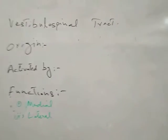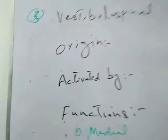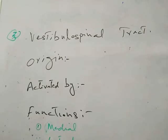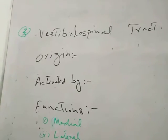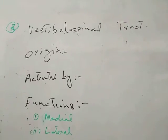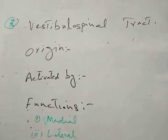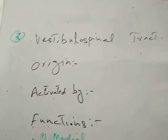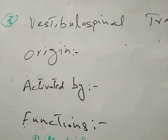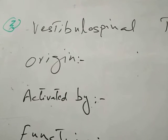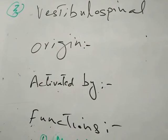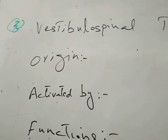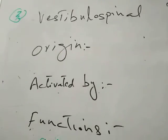Bismillah ar-Rahman ar-Rahim. Now we are starting our next tract, number 3, which is named as the Vestibulospinal Tract. This is a descending tract going to the spinal cord. 'Vestibulo' means it originates from the vestibular apparatus. The vestibulonuclear complex, present in the medulla on both sides, is the key structure here.